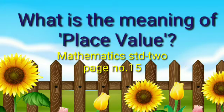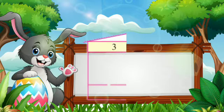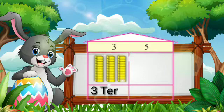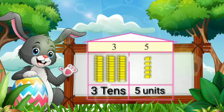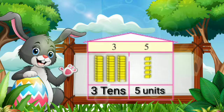Mathematics Standard 2, page number 15. What is the meaning of place value? In the number 35, we have 3 in the tens place. If we open 3 tens as bundles, we get 30 units. That's why the place value of 3 in the number 35 is 30.